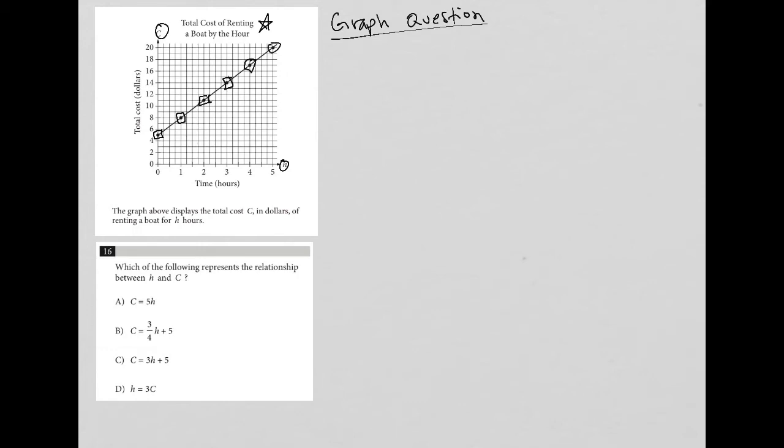So this question says, which of the following represents the relationship between h and c? Well, the best way to figure out the relationship or the best way to figure out which one of the equations represents the relationship is to choose one of the ordered pairs and see which equation that ordered pair fits in.